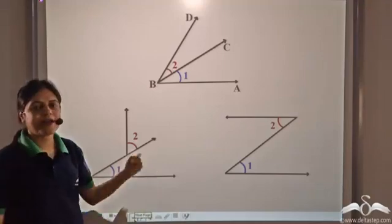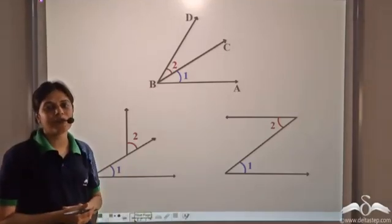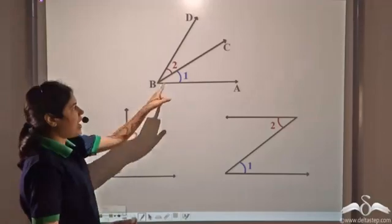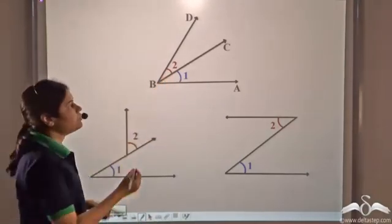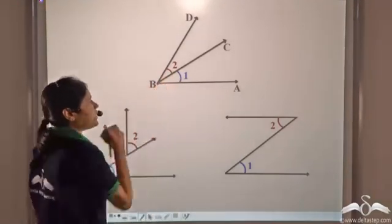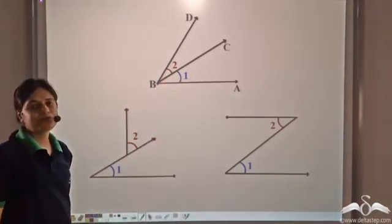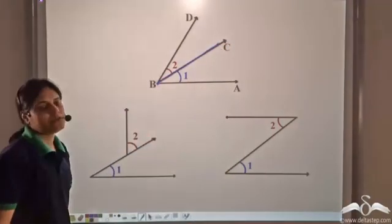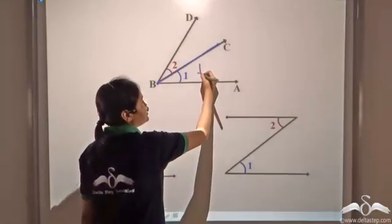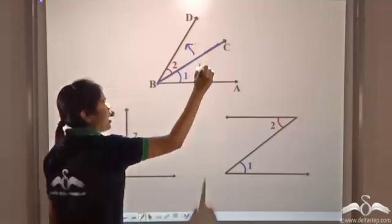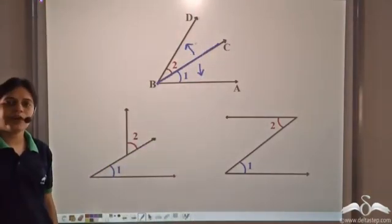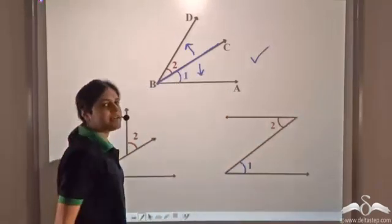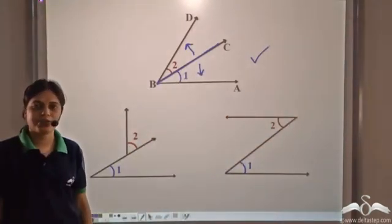So we have these angles here. Let us see which of them are adjacent angles. Angle one and angle two have a common vertex, they have a common arm, and the non-common arms are on either side of the common arm. So yes, angle one and angle two are adjacent angles.